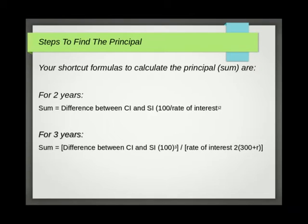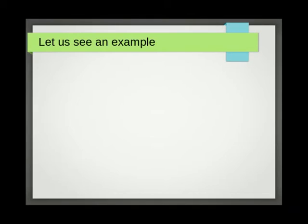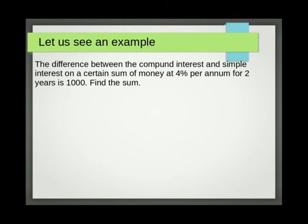If difference between CI and SI is given for three years, then your formula will be Sum = [Difference between CI and SI × 100³] / [rate of interest × 2(300 + r)]. Let us see an example.